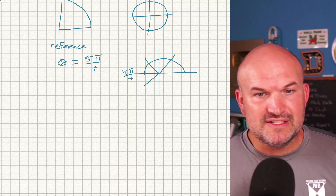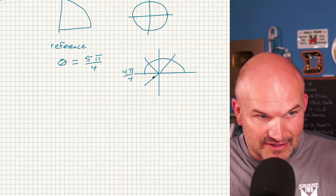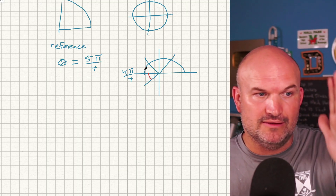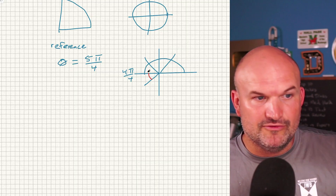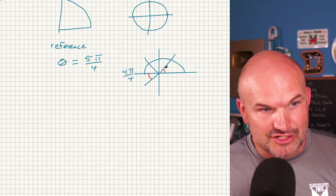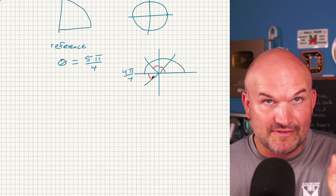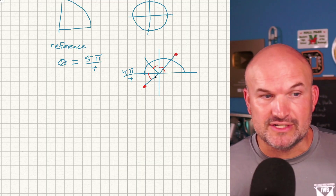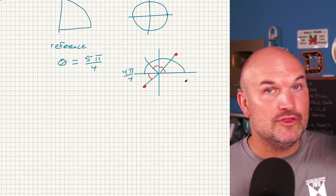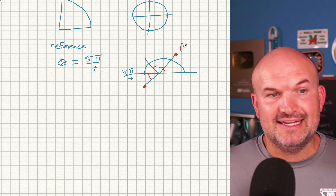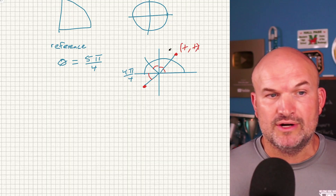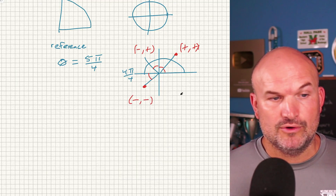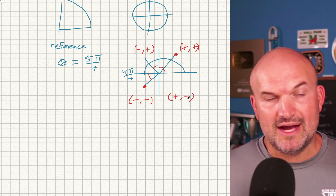Here's where the reference angle comes in. The reference angle is the acute positive angle between the terminal side and the x-axis. Each section here is π/4, so the reference angle is π/4. Now, knowing the quadrant signs: first quadrant is (+, +); second quadrant is (−, +); third quadrant is (−, −); fourth quadrant is (+, −). The point at 5π/4 uses the same values as π/4 — just with the appropriate signs for the third quadrant.